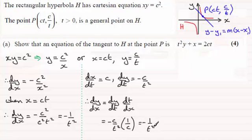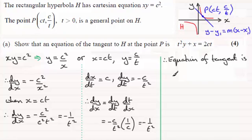So either way we're getting obviously the same gradient. So that puts us now in a good position to work out what the equation of the tangent is. So I'll just put an intro here. Therefore equation of tangent is, and using this form then it's going to be y minus y1, y1 being c over t equals the gradient m which is minus 1 over t squared times x minus x1. x1 is ct.